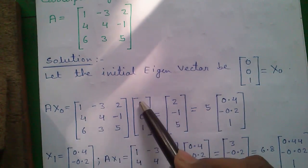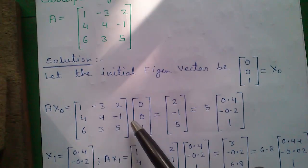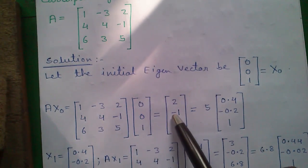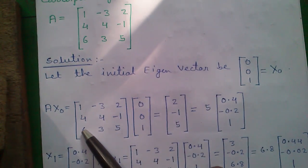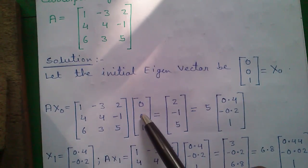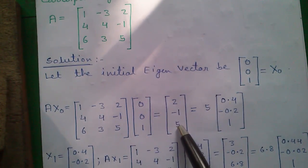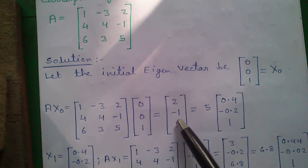Similarly, 4 into 0 plus 4 into 0 plus -1 into 1 equals -1. And 6 into 0 plus 3 into 0 plus 5 into 1 equals 5.